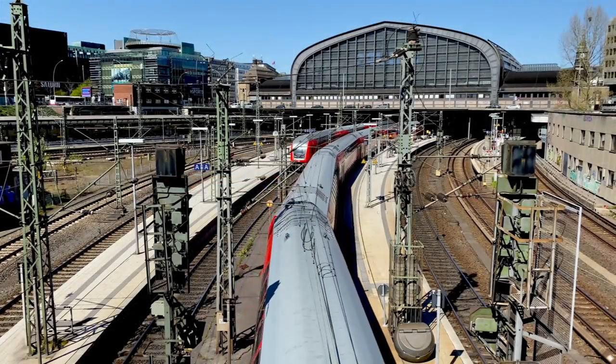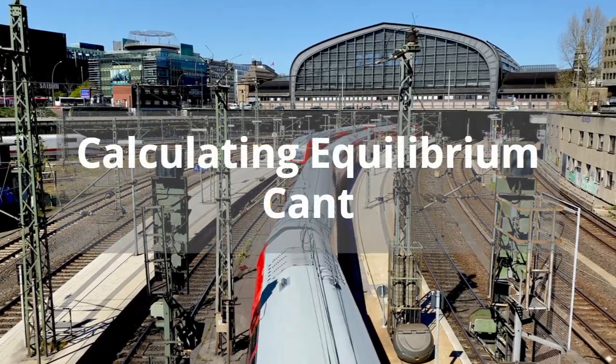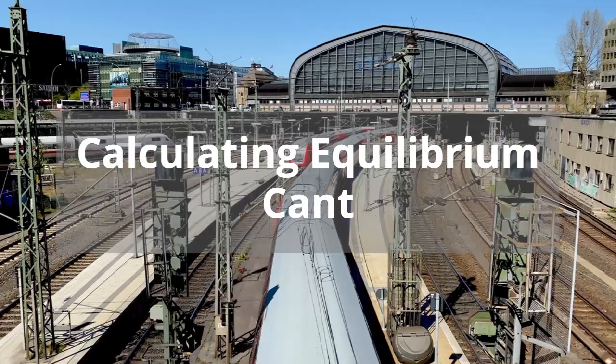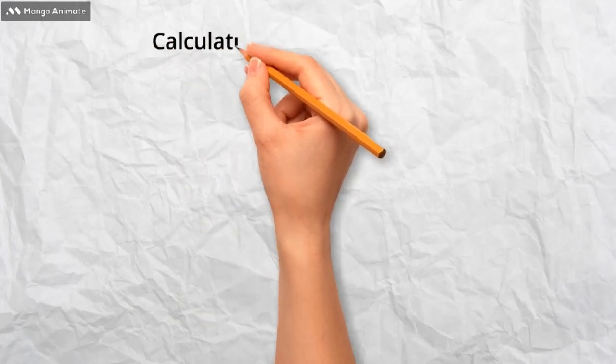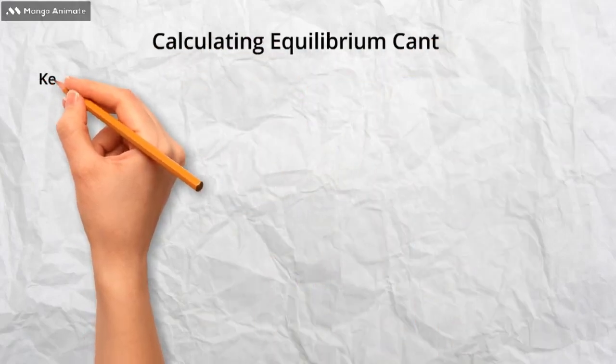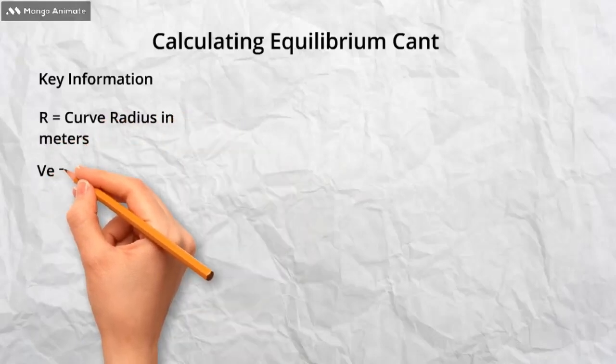Now we know what equilibrium cant is, let's look at how we work out the equilibrium cant value for a particular curve. First, we need to know some key information. We need the radius of the curve, in meters. This is known as R.